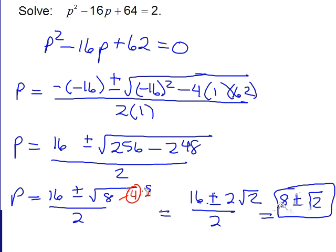So our final solution then is p is either 8 plus radical 2, or p is 8 minus radical 2.